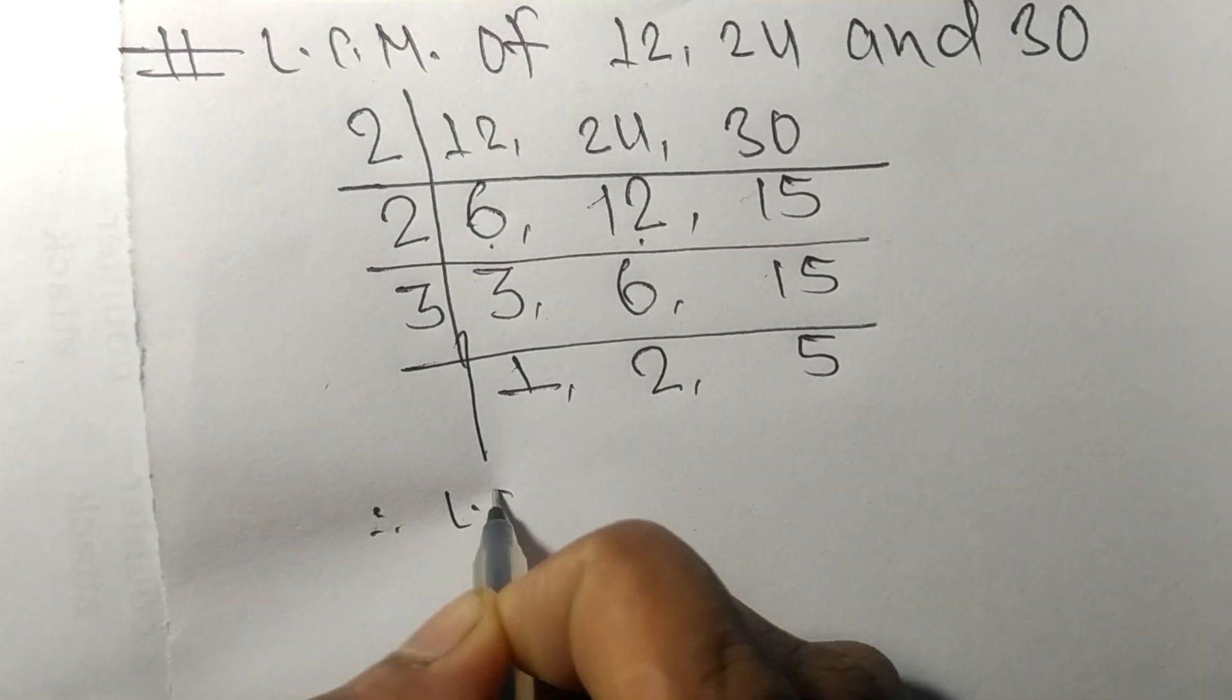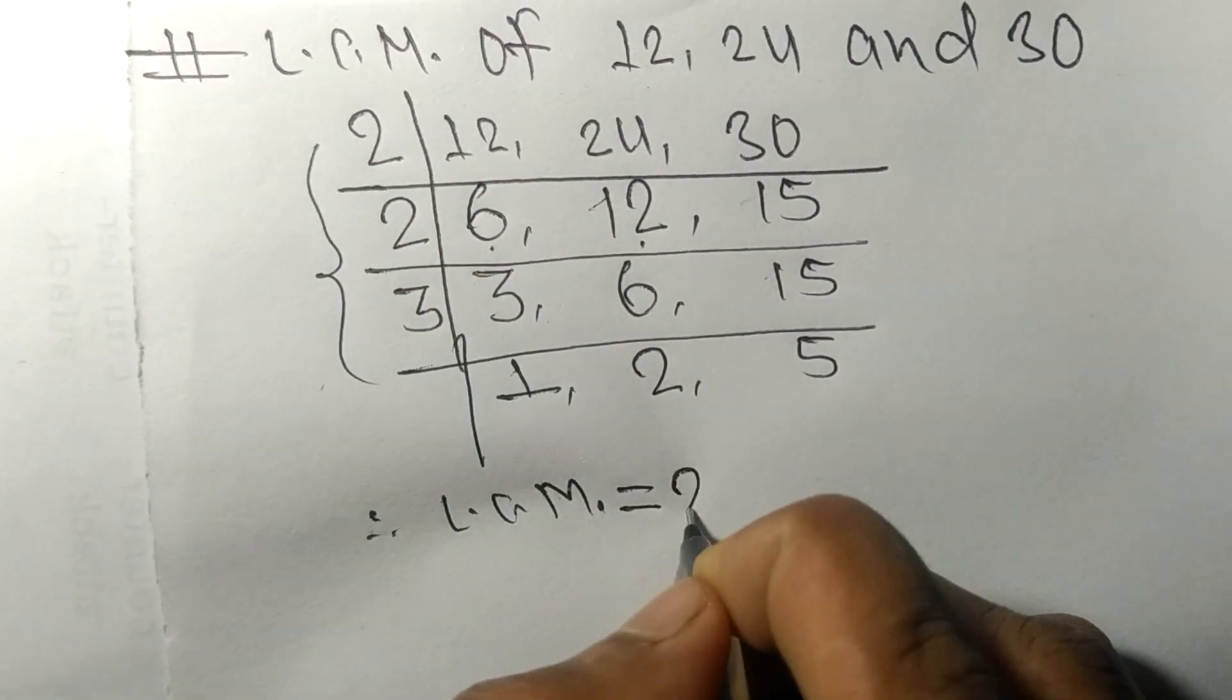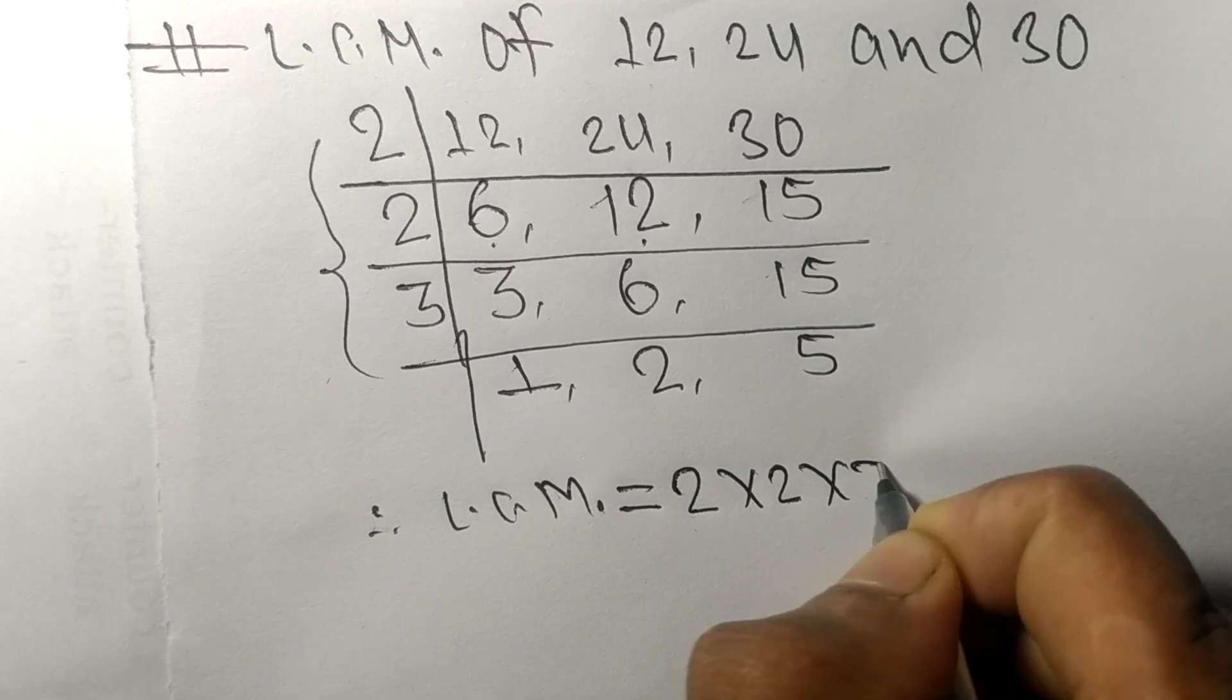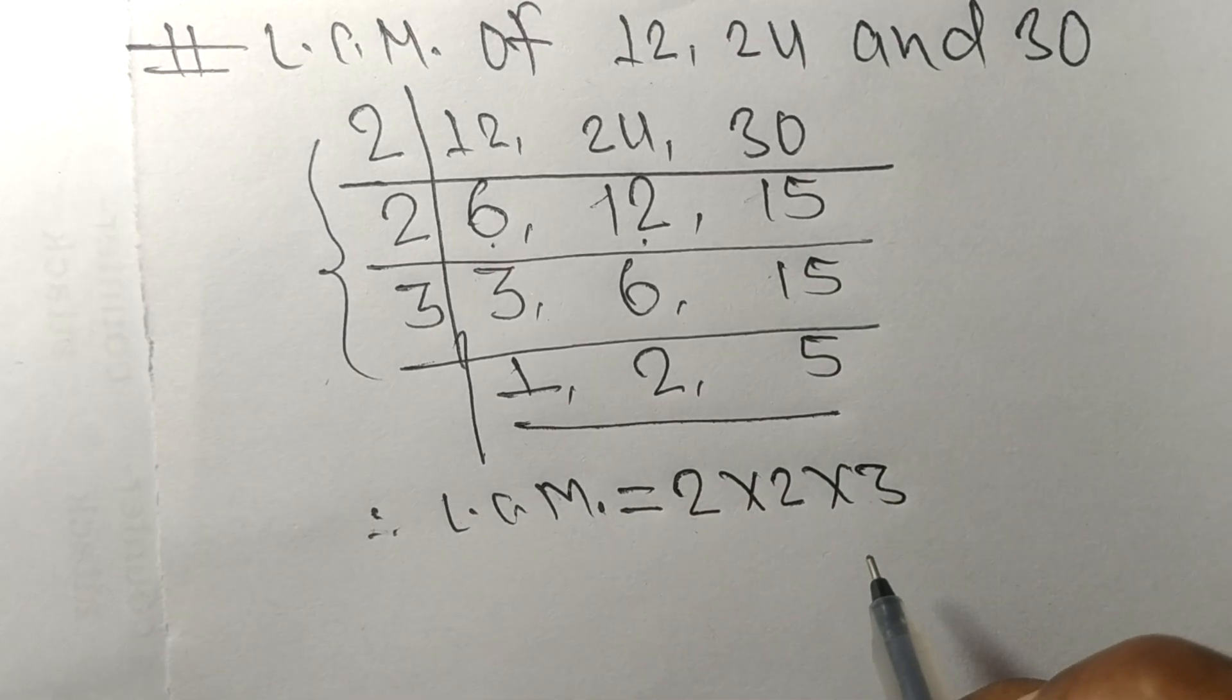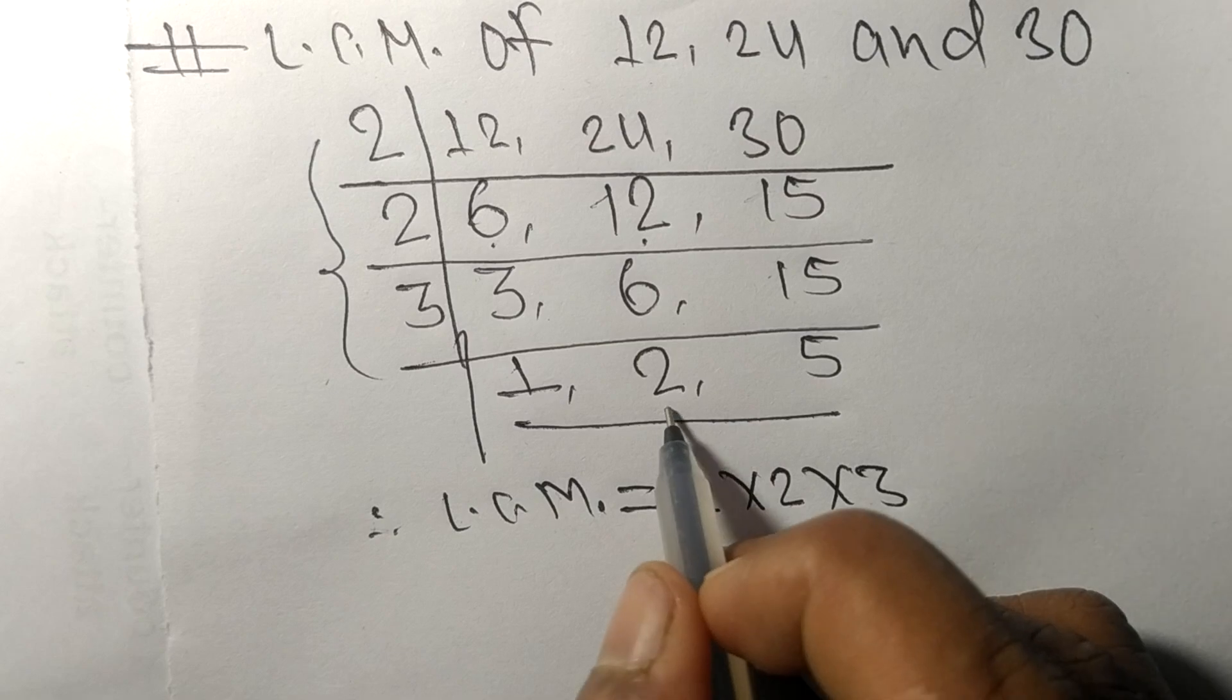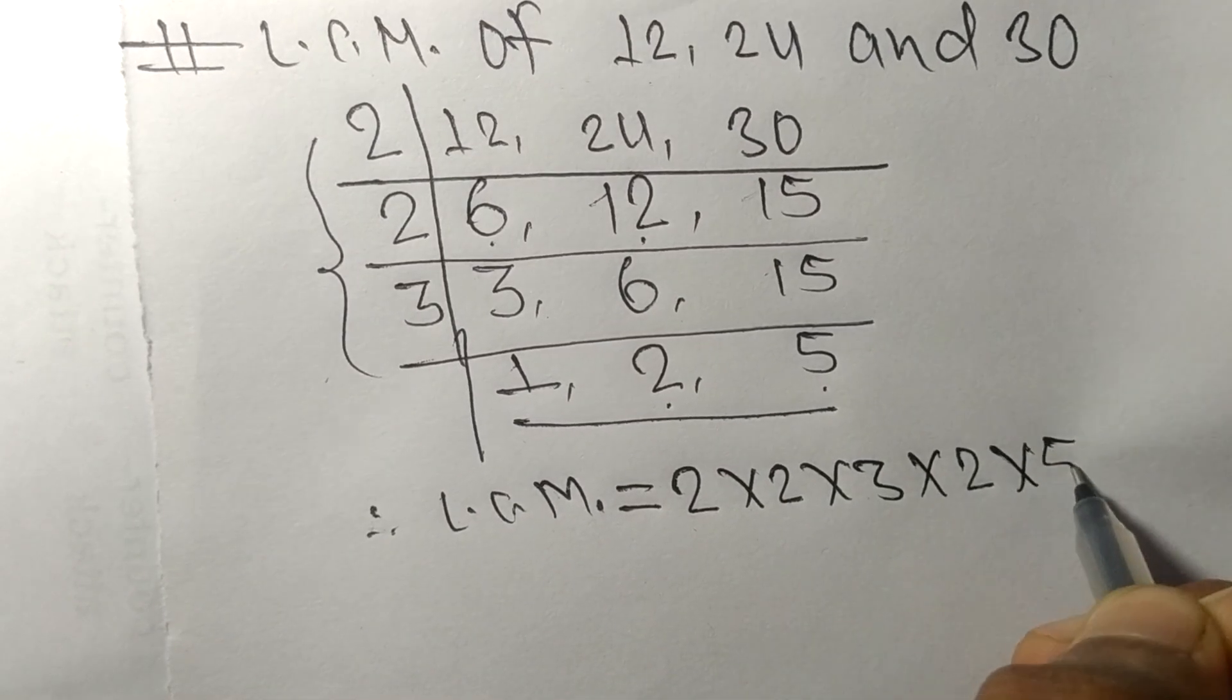So each LCM is equal to, from this side, it is 2 times 2 times 3. From this side, we choose the numbers greater than 1, that is 2 and 5.